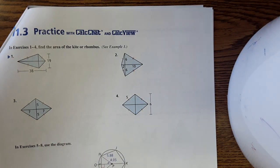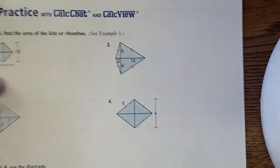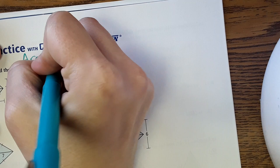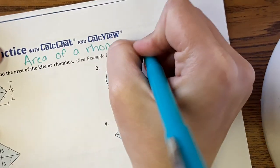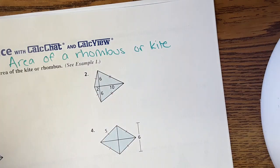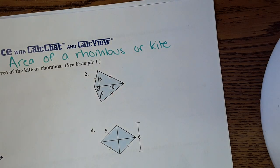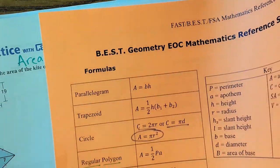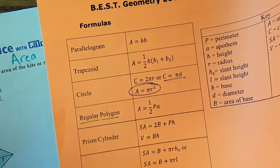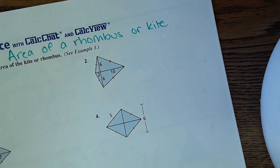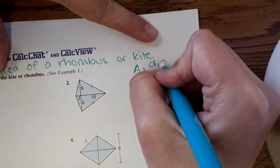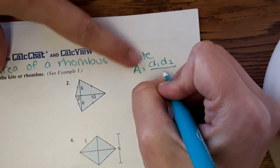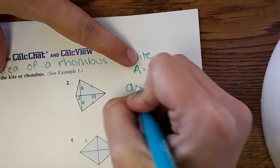We're going to start with finding the area of kites or rhombuses. There is an equation for this: the area of a rhombus or kite. It does have an equation, however this equation actually isn't on the reference sheet at all. So I'm hoping by teaching you the concept you'll be able to remember what to do. The equation is area equals d1 times d2 — diagonal 1 times diagonal 2 — divided by 2. So d equals diagonal.